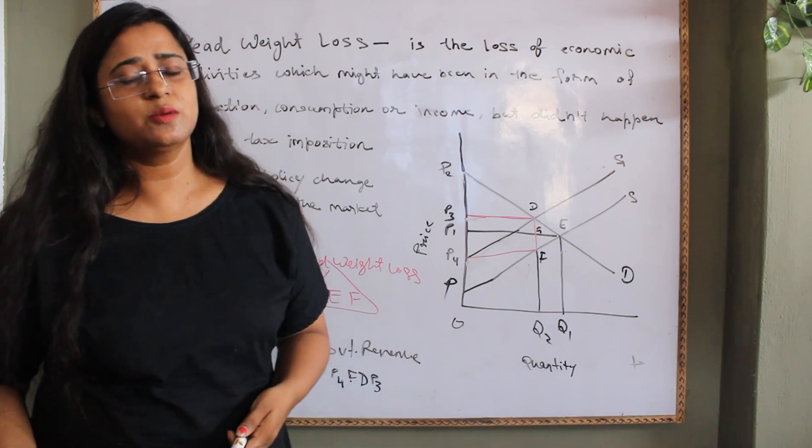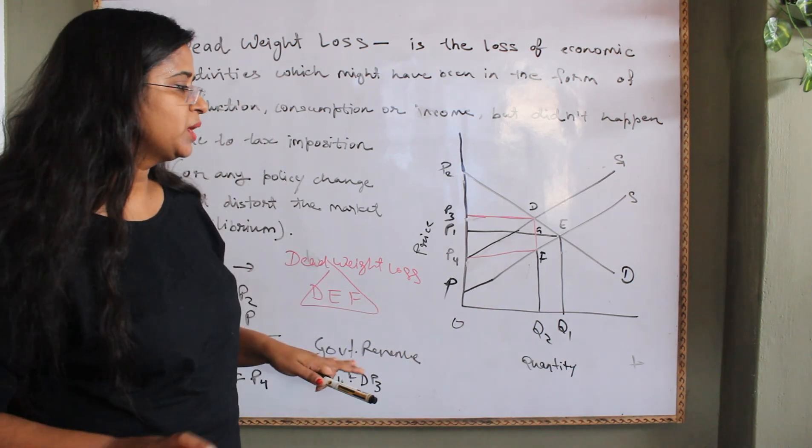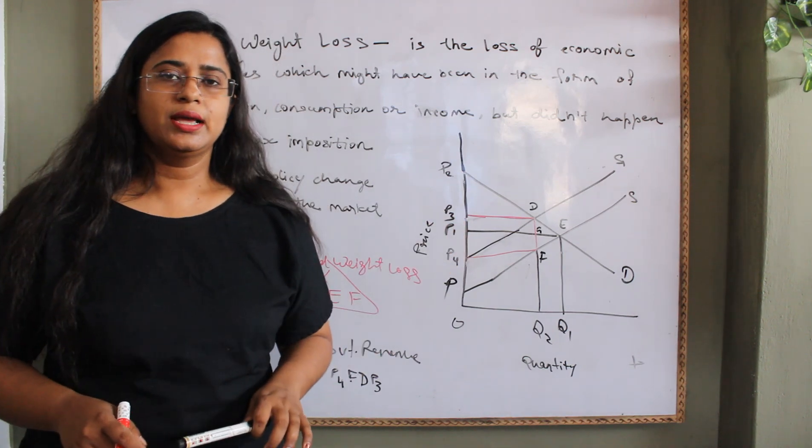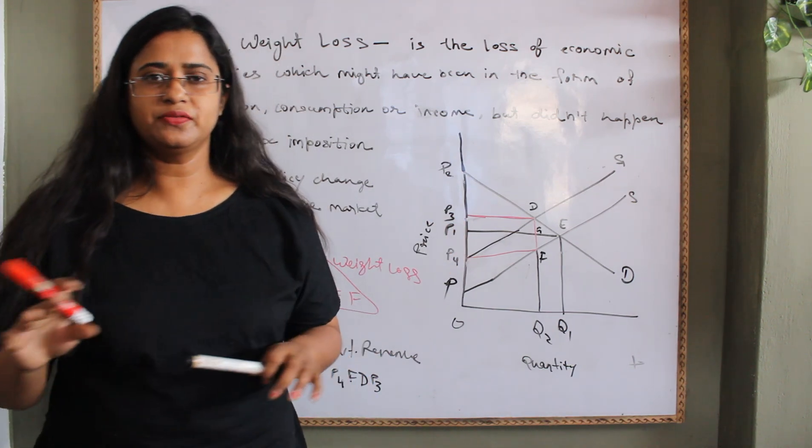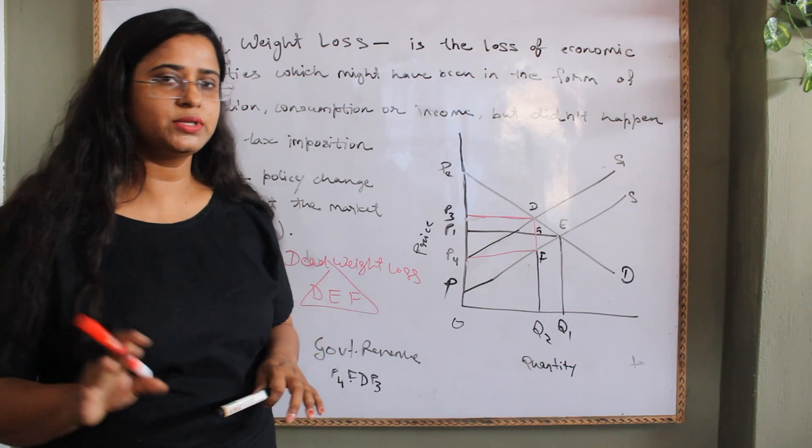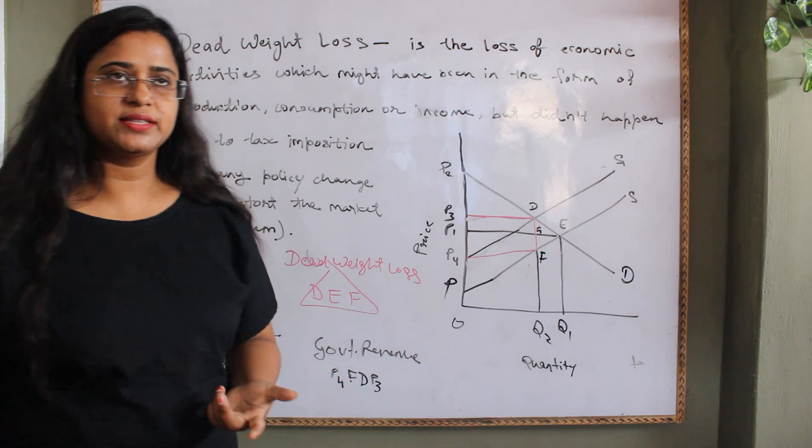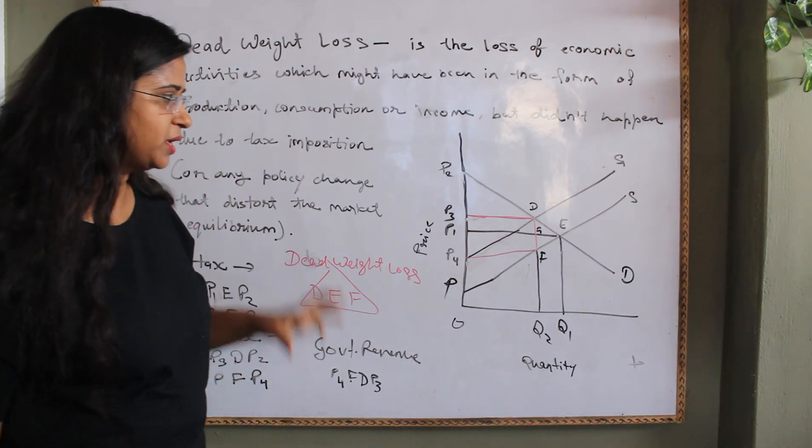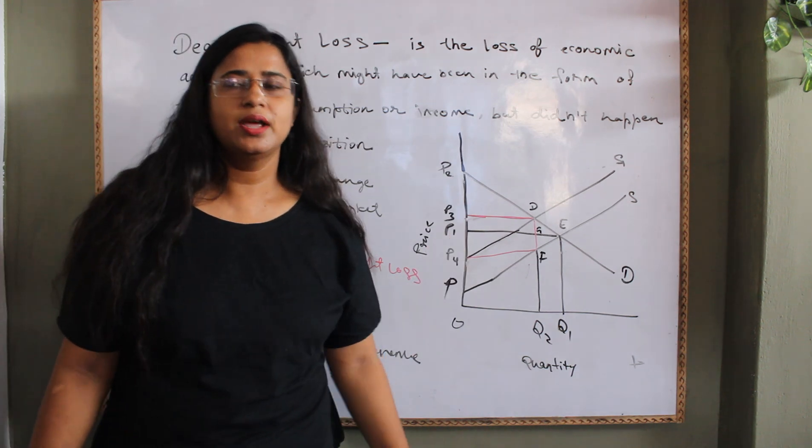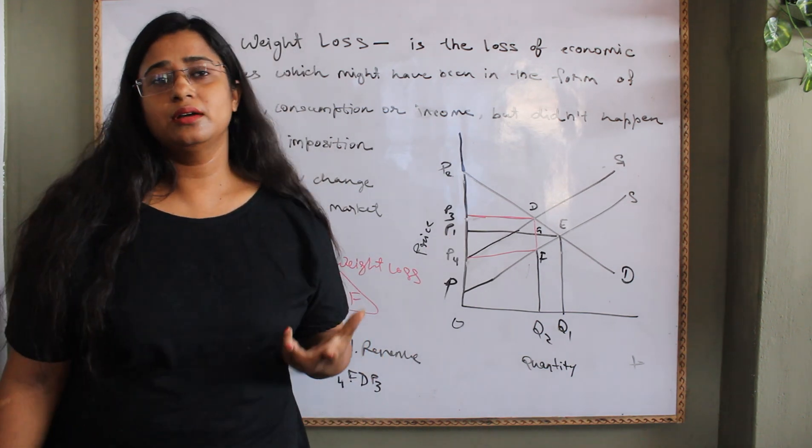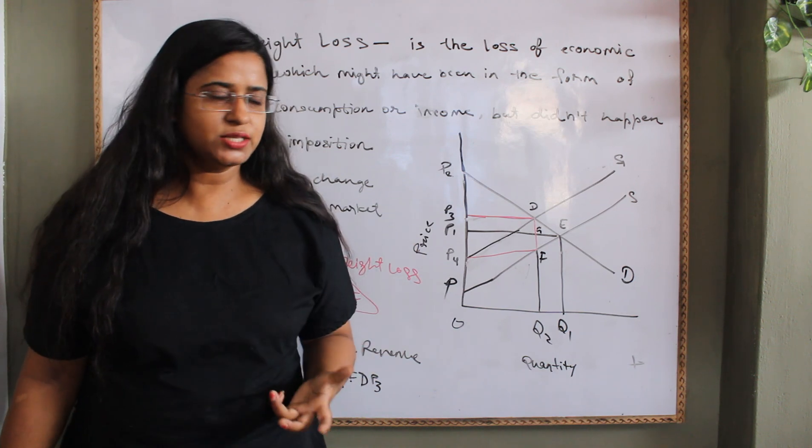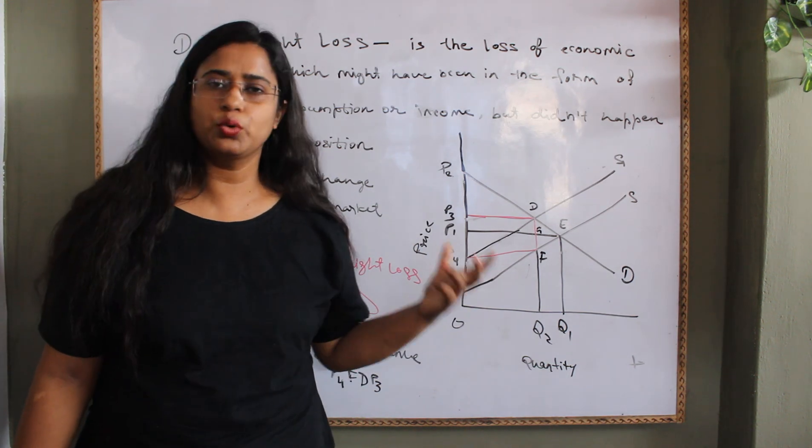Neither production, neither consumption, neither government revenue. Why this happened? Because taxation is an interference of some external forces with regard to the market. Government imposes taxation and it distorts the market. It distorts the preference of the consumer. It distorts the decision of the producer how much he is going to produce.